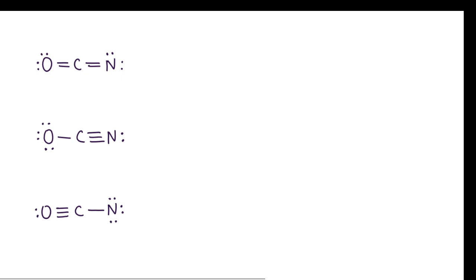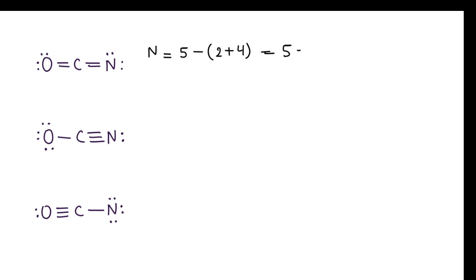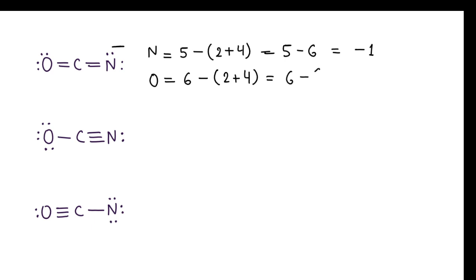Let's calculate formal charge, starting with the nitrogen atom in the first structure. Formal charge for N equals 5 minus (number of bonds: 2) plus (non-bonded electrons: 4), giving 5 minus 6 equals minus 1. So there is a minus charge on this nitrogen atom. For oxygen in this structure: 6 minus (bonds: 2) plus (non-bonded electrons: 4) equals 6 minus 6 equals 0. So 0 charge on this oxygen atom.